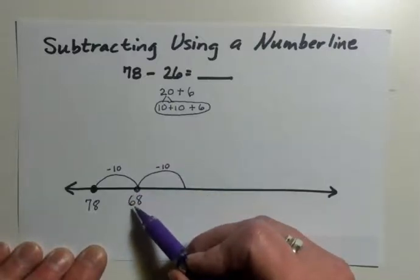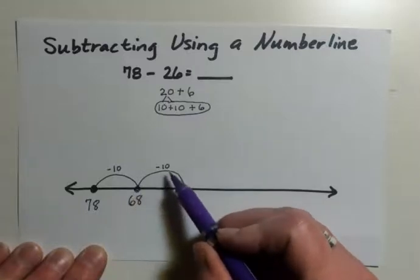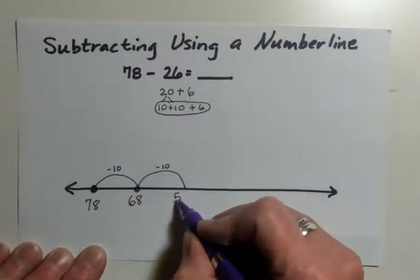Then, if I go 10 down from 68, I use mental math, and it would be 58.